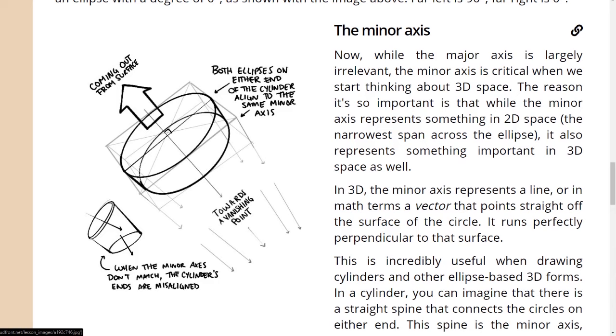The minor axis. Now while the major axis is largely irrelevant, the minor axis is critical when we start thinking about 3D space. The reason it's so important is that while the minor axis represents something in 2D space, the narrowest span across the ellipse, it also represents something important in 3D space as well.